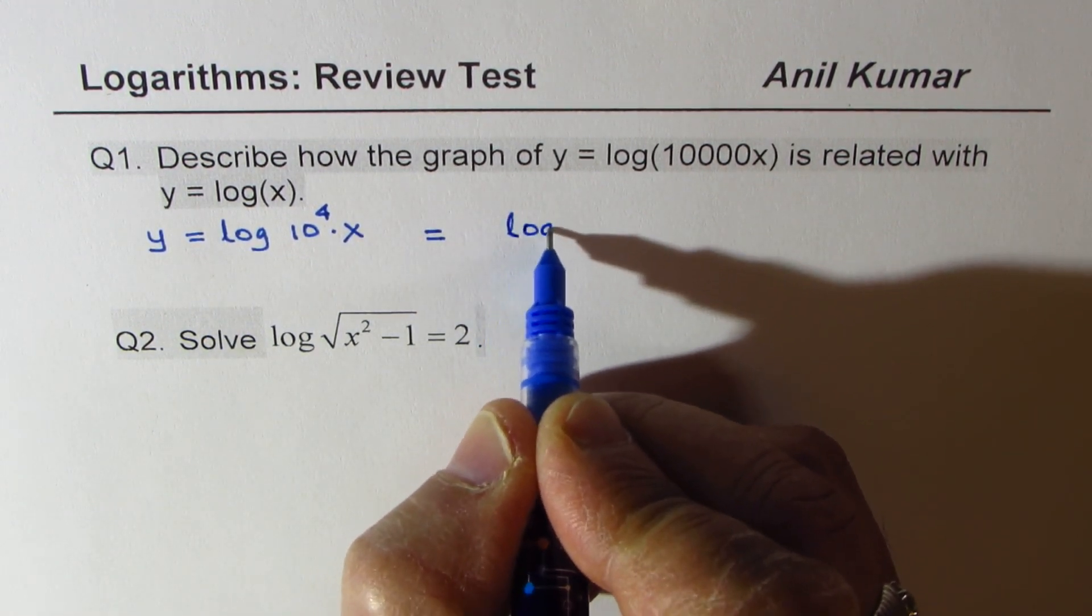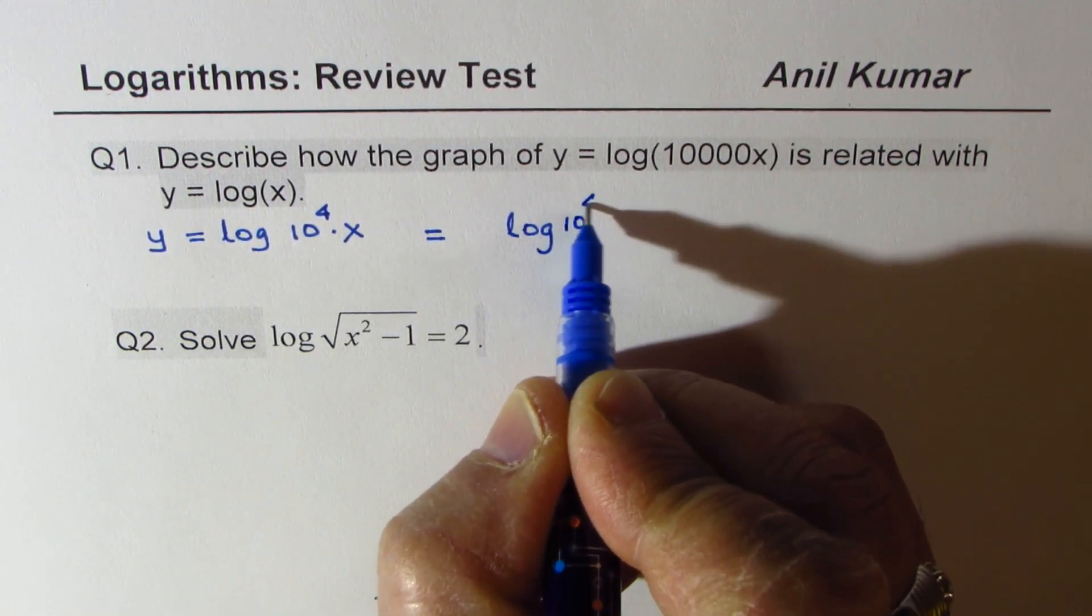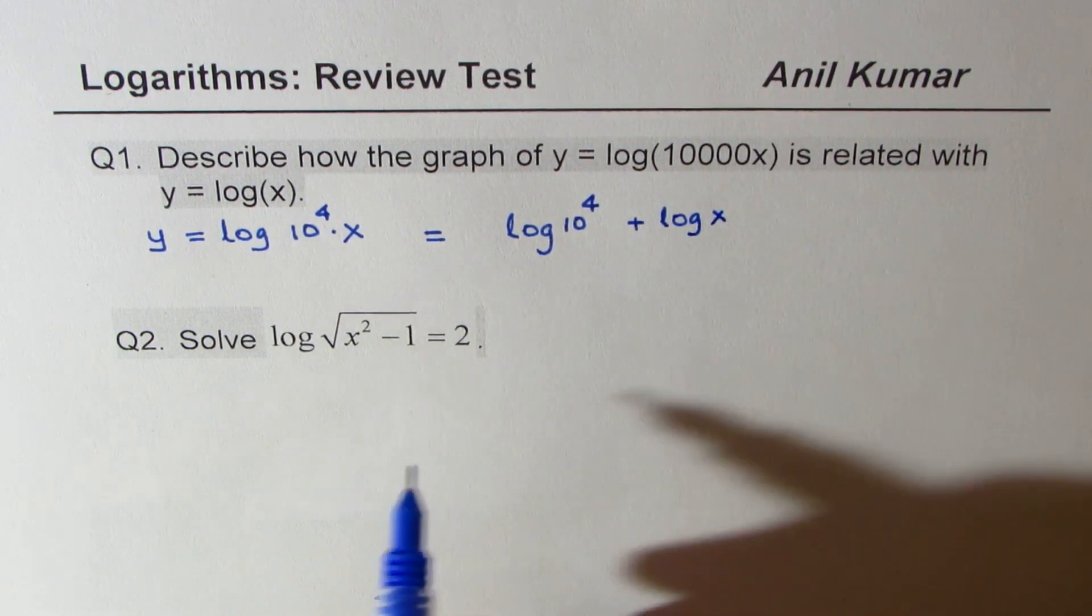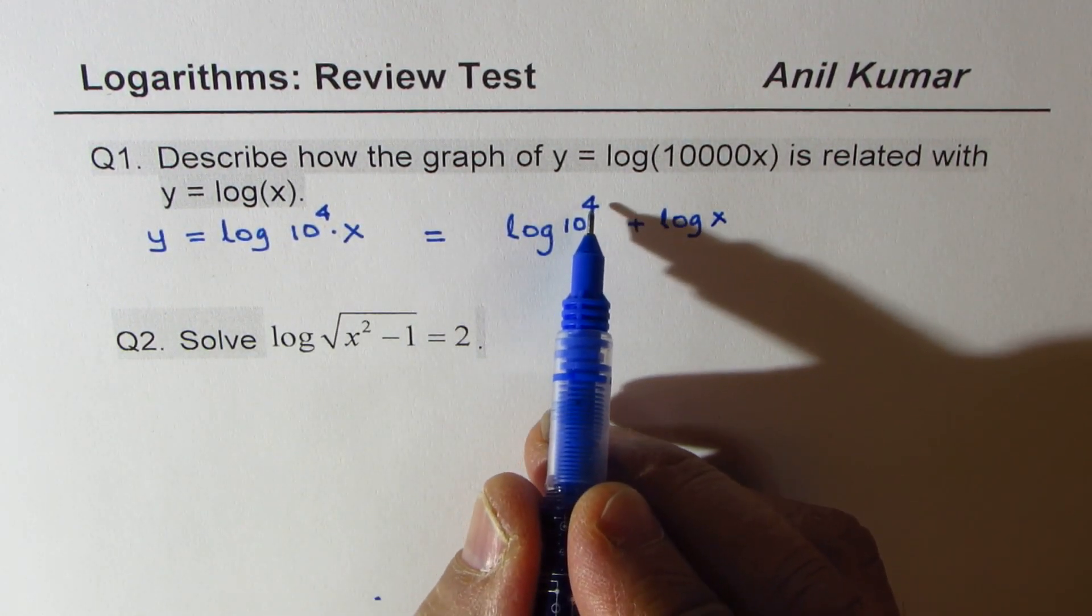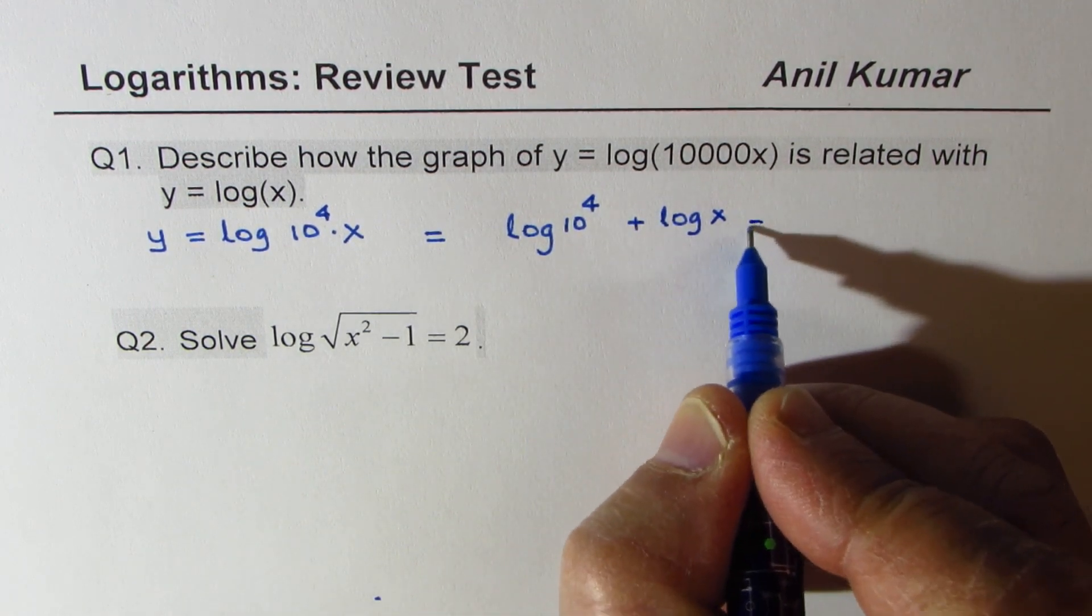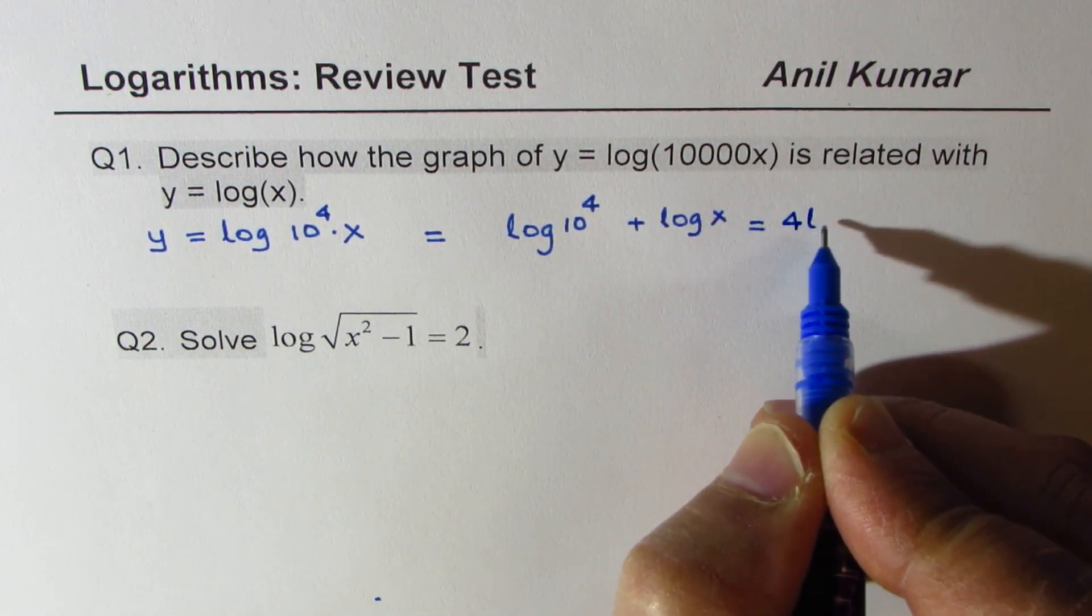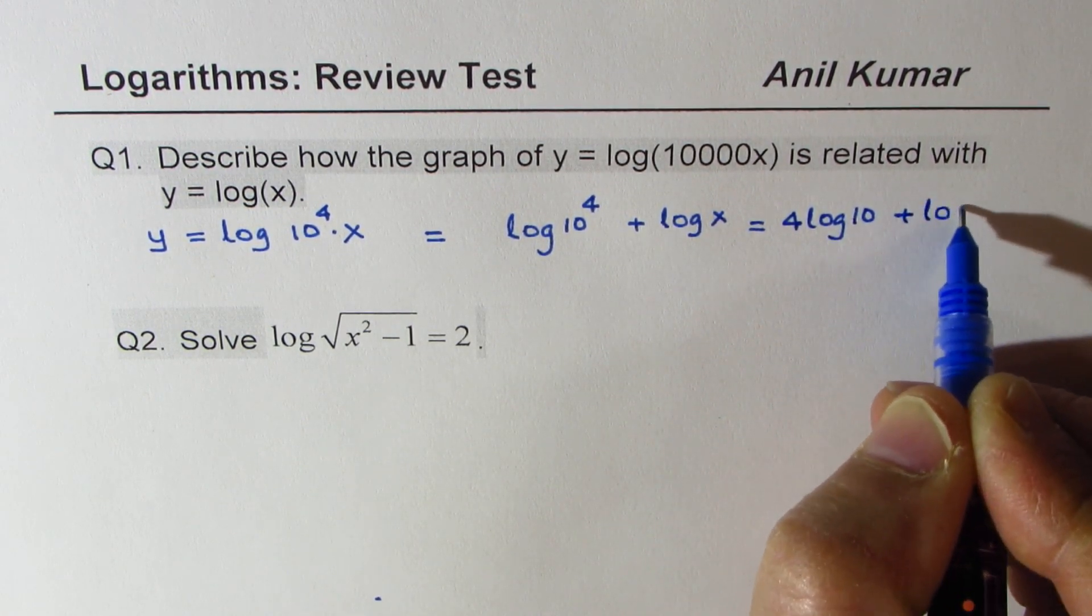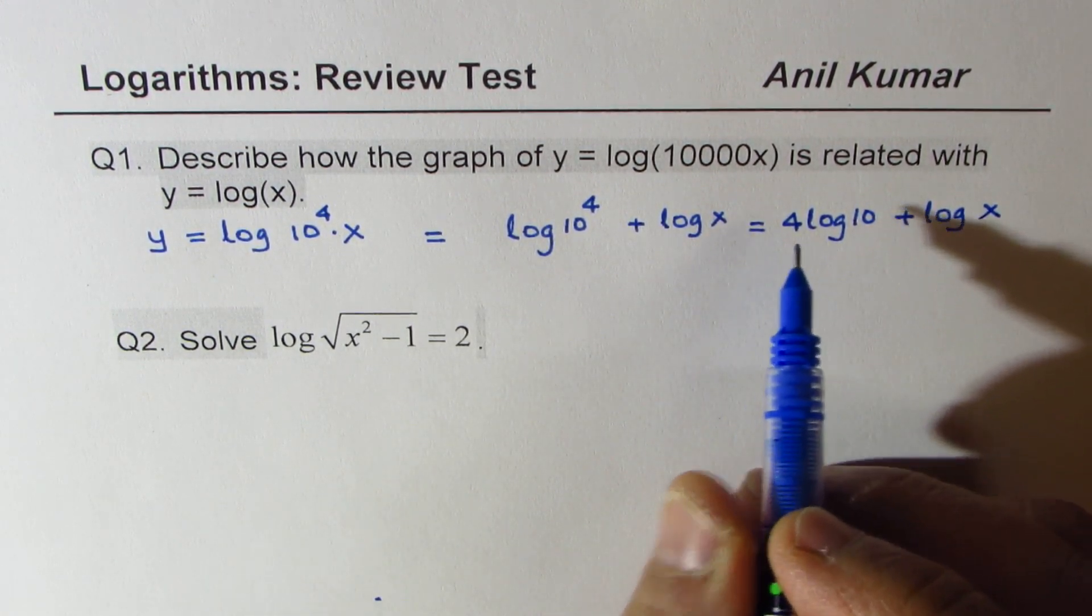We could always write this using the logarithmic rules in product form, so we could write this as log of 10 to the power of 4 plus log of x. And now we can apply the power rule and write this as 4 times log of 10 plus log of x.